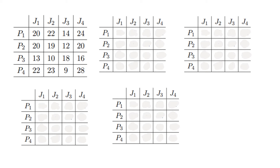We want the optimal allocation to minimize the amount of time spent on those jobs. The first thing we need to do is perform a row reduction. Start with the first row — person one — and identify the lowest value in that row, then subtract all the values in that row by that value, which is clearly 14. So 14 is the lowest value in that row, and we're going to subtract every value in that row by 14.